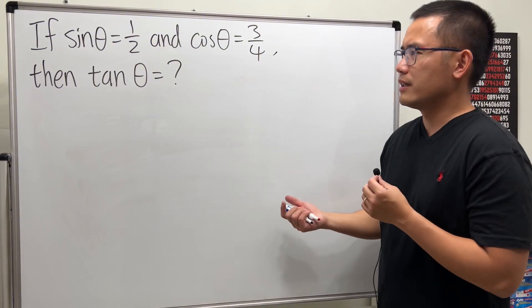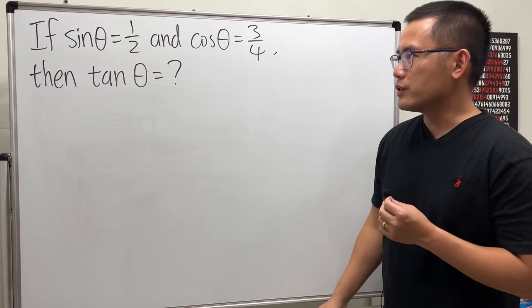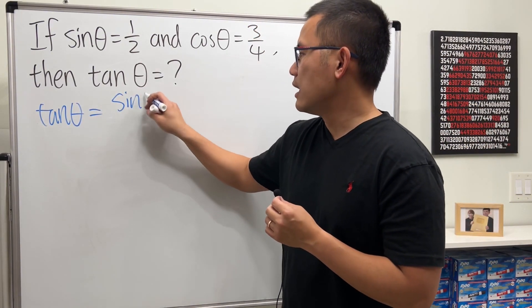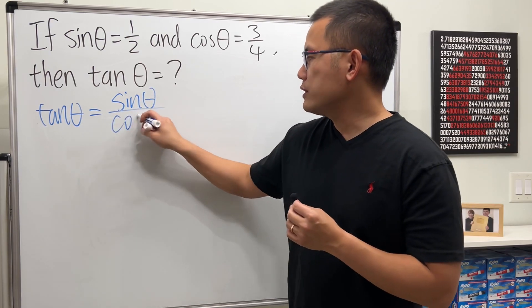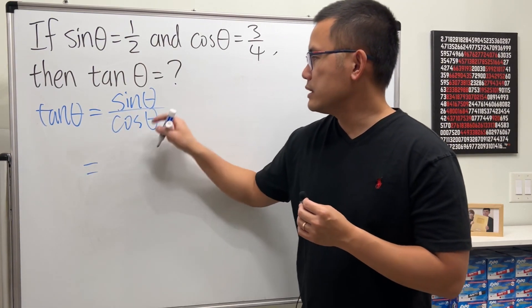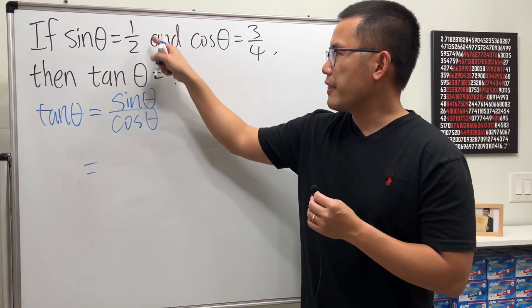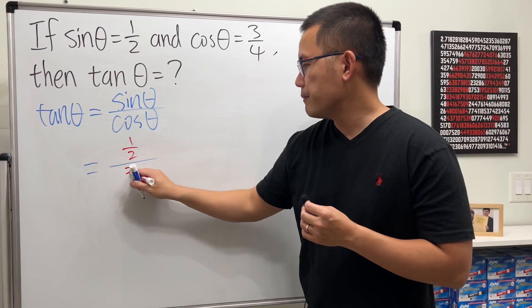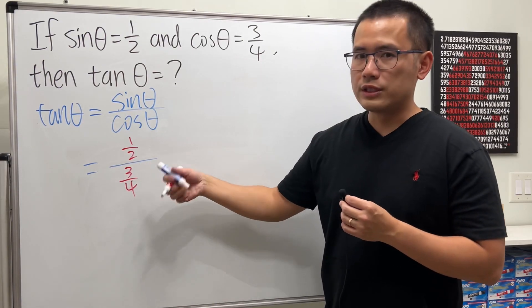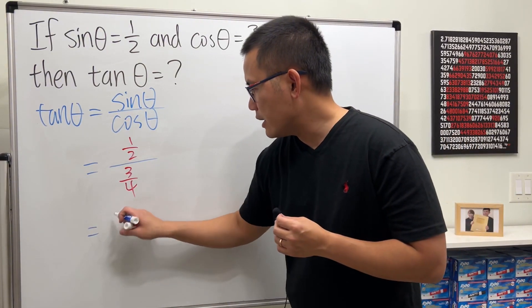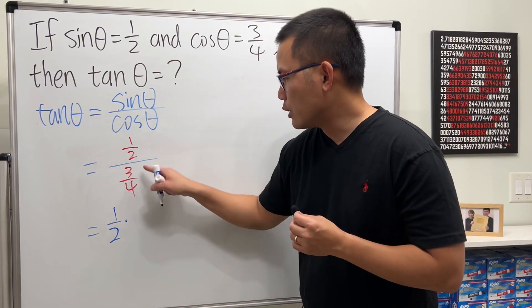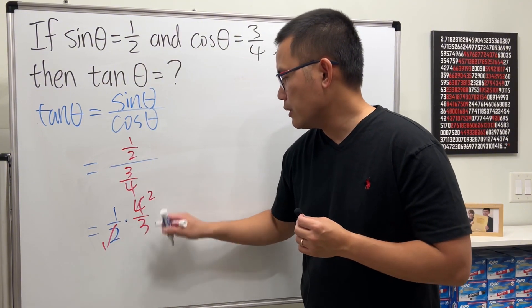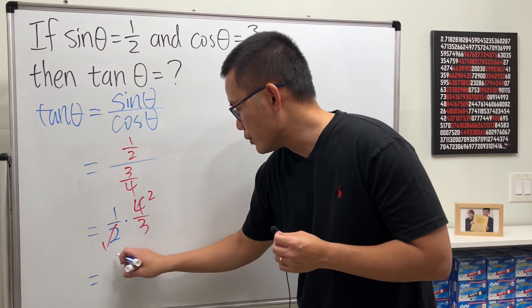You might be wondering, this looks like a pretty innocent question. Tangent θ, by identity, we can say that's sin θ over cos θ, and we see that we have the values for both of these. Sin θ is 1/2, cos θ is 3/4. We can simplify this complex fraction: 1/2 times the reciprocal 4/3, reduce, and you end up with 2/3.